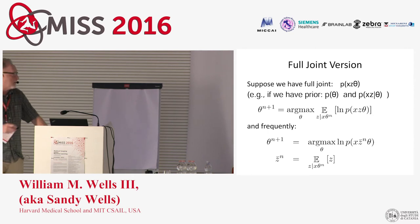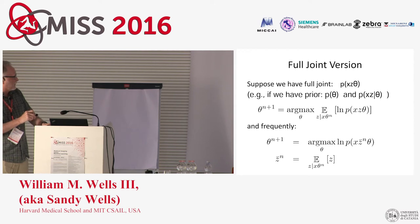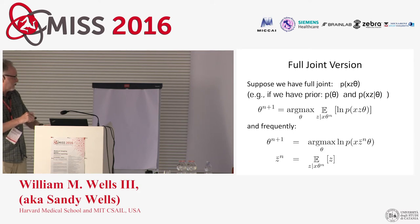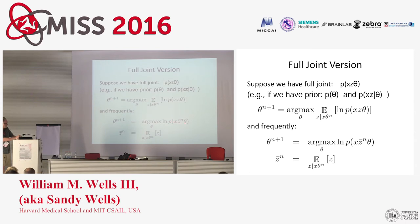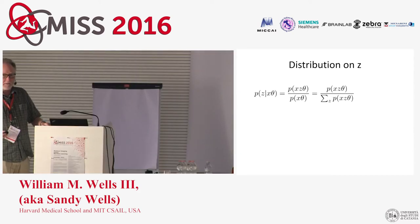This can be made slightly more general: we might have a prior on theta. If so, we can construct the complete joint distribution, and the MAP estimate can be obtained with the same iteration — not much changes, it's just that this now has the joint rather than the conditional. And again, obtaining the required distribution on Z is no problem if you have the full joint distribution.